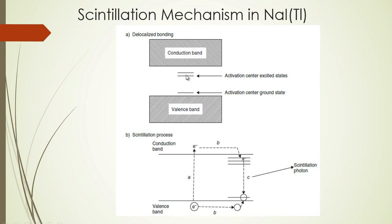So there is now a hole at the activation center ground state and an electron at the activation center excited state. The transition from the activation center excited state down to the activation center ground state is quantum mechanically possible, and when the electron makes this transition it releases a photon with energy corresponding to that band gap.